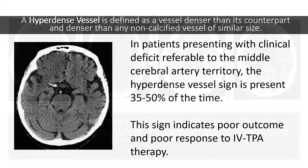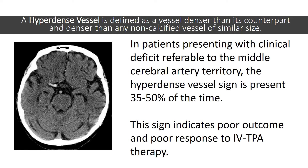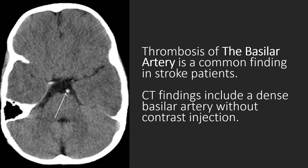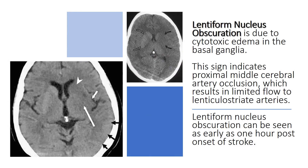A hyperdense vessel is defined as a vessel denser than its counterpart and denser than any non-calcified vessel of similar size. In patients presenting with clinical deficit referable to the middle cerebral artery territory, the hyperdense vessel sign is present 35-50% of the time. This sign indicates poor outcome and poor response to intravenous tissue plasminogen activator therapy. Thrombosis of the basilar artery is a common finding, appearing as a dense basilar artery without contrast injection. Lentiform nucleus obscuration is due to cytotoxic edema in the basal ganglia, indicating proximal middle cerebral artery occlusion with limited flow to lenticulostriate arteries.